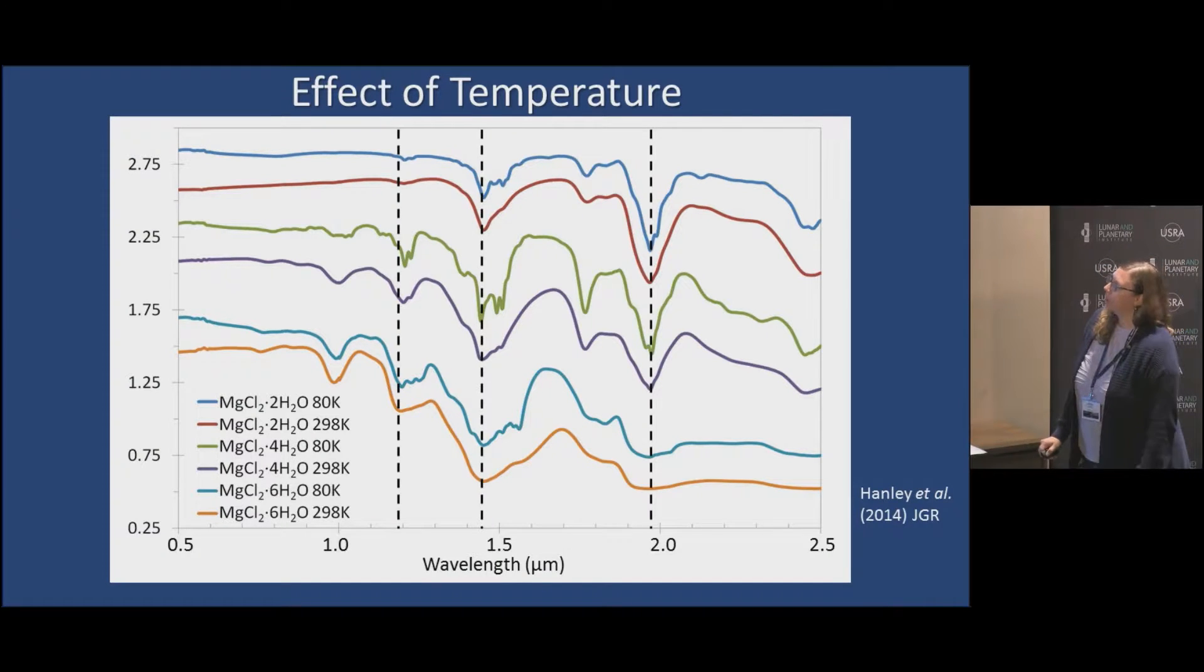I'll just show some other spectra that I've collected in the lab and the importance of collecting it at the right temperature. Here's three pairs of spectra: the top pair is magnesium chloride 2H2O, the middle pair is 4H2O, and the bottom pair is 6H2O. Within each pair, the bottom spectra is at room temperature and the upper is at 80 Kelvin. You can see quite a difference between the room temperature and the Europa temperature spectra.